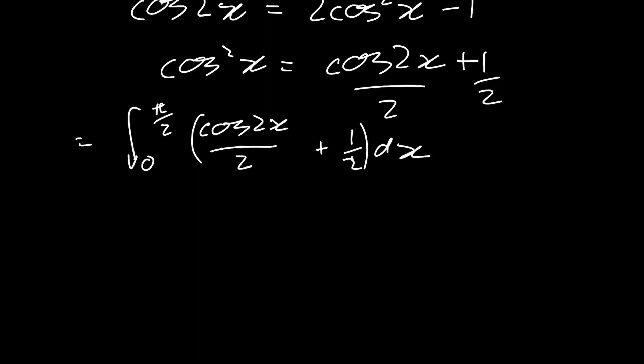So solving this integral, cosine of 2x, the integral of that is going to be sine of 2x divided by 2 because of this 2 inside the cosine. So now if it's divided by 2 and it was already divided by 2, then we have it over 4.